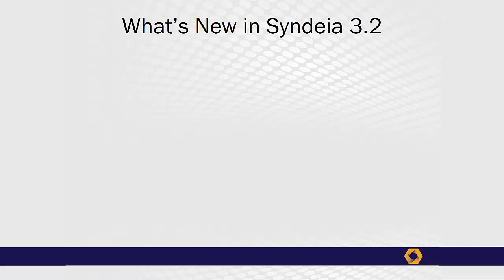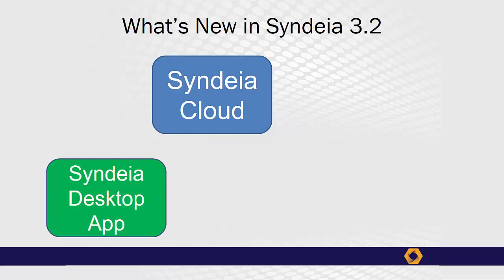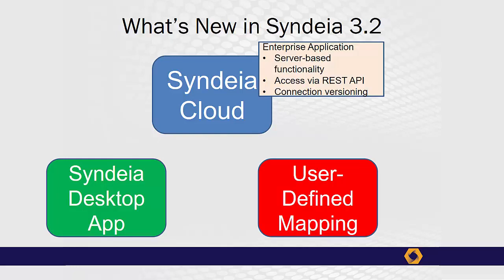Cyndia 3.2 introduces three important new elements: Cyndia Cloud, Cyndia Desktop App, and User-Defined Mappings. Cyndia Cloud is a server-based enterprise application that holds more of Cyndia's functionality, including the connection database and visualization.